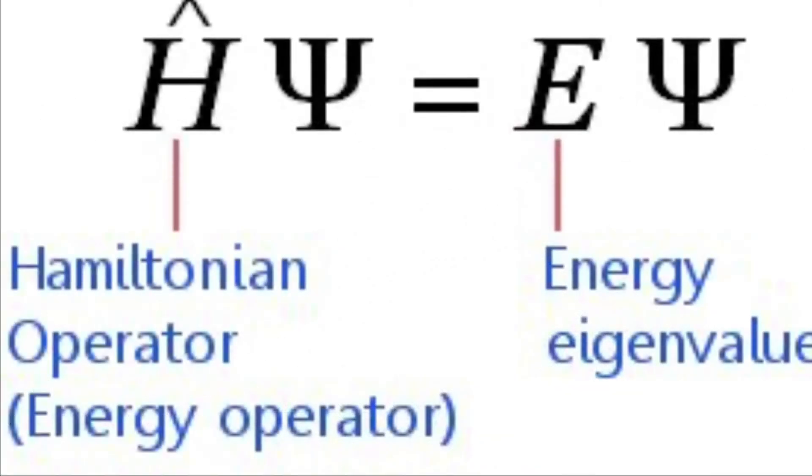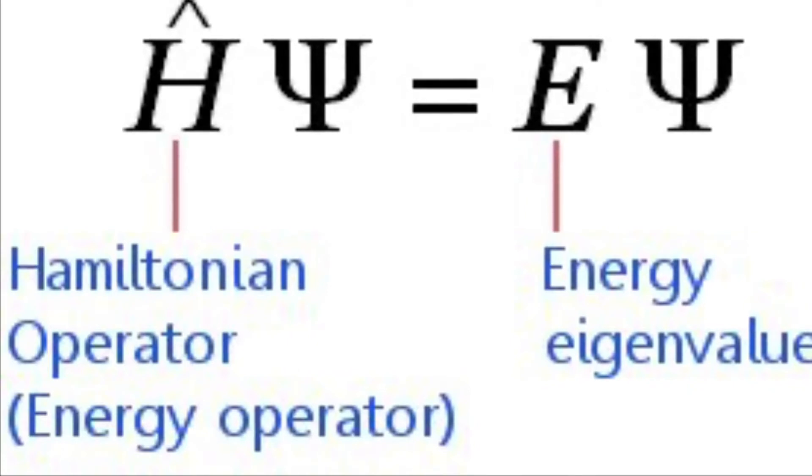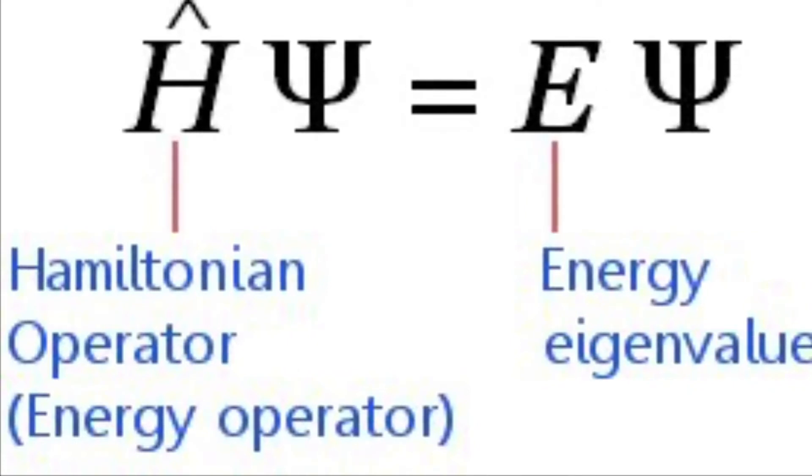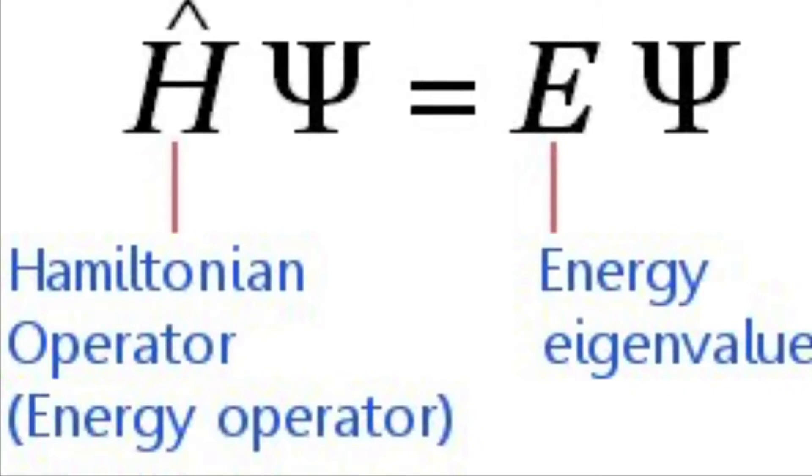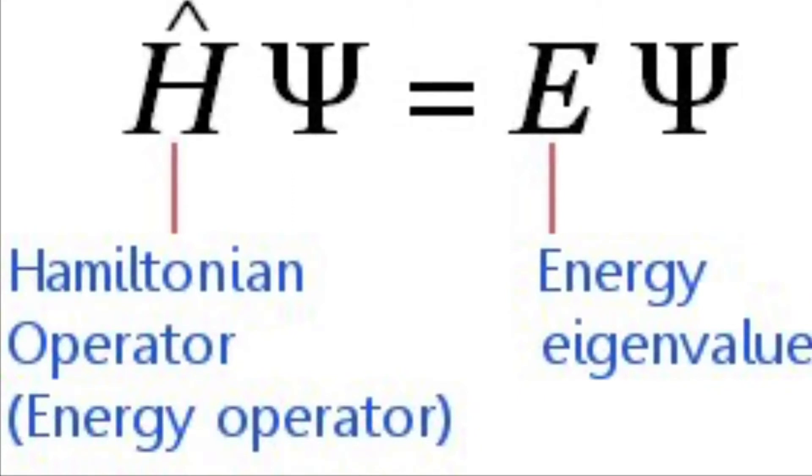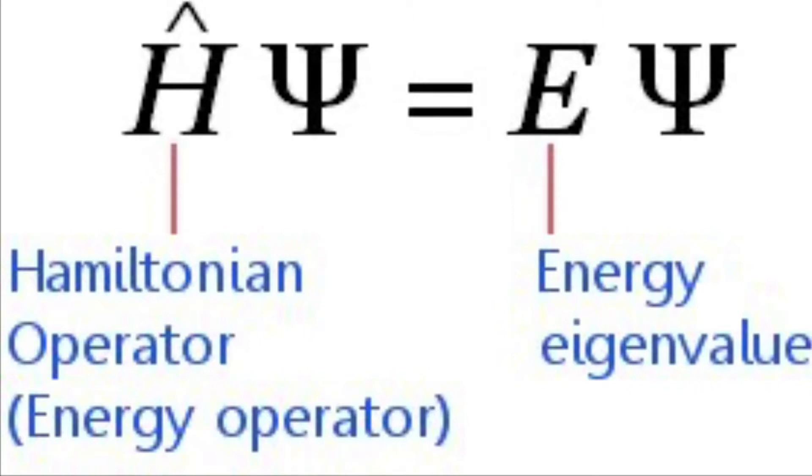The model previously seen was formulated by Schrödinger, who assumed that the electrons could be treated as matter waves. The basic form of Schrödinger's wave equation is seen on screen. The psi is the wave function. The wave functions that are derived from Schrödinger's equation for a specific atom are called atomic orbitals.